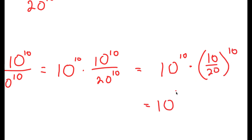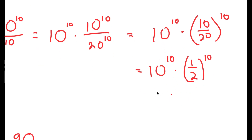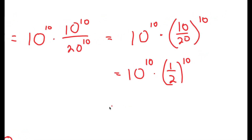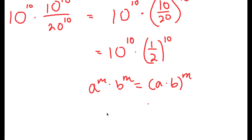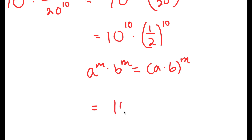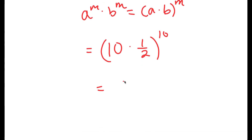This is equal to 10 to the power of 10 times one half to the power of 10. And finally, using the property a to the power of m times b to the power of m equals a times b to the power of m, this turns into 10 times one half to the power of 10, which equals 5 to the power of 10.